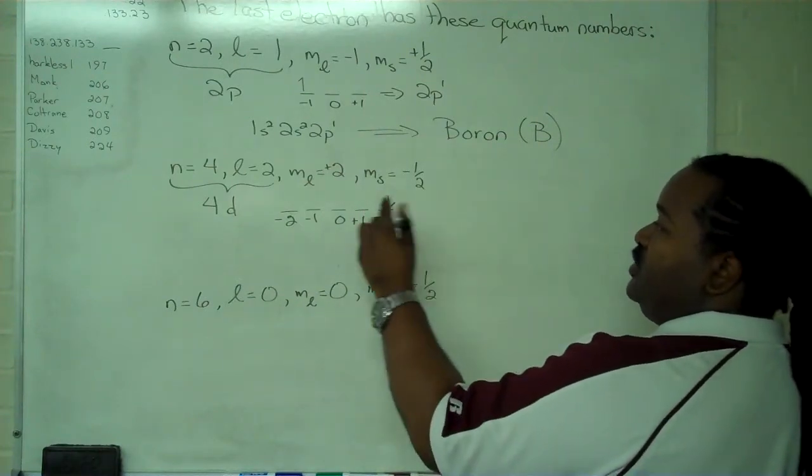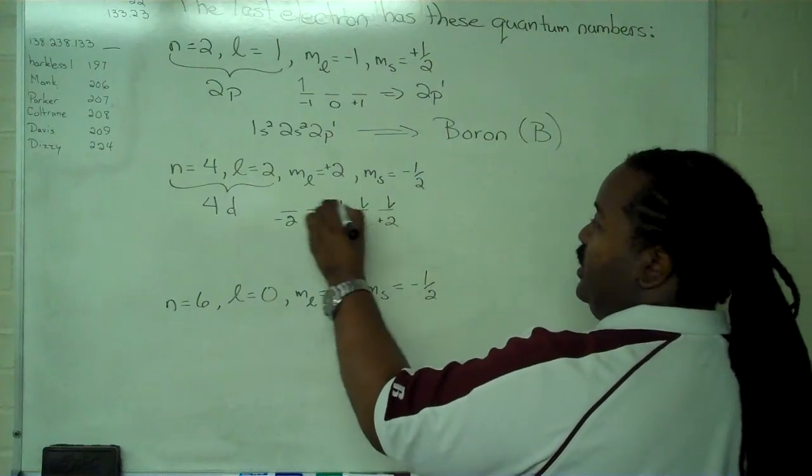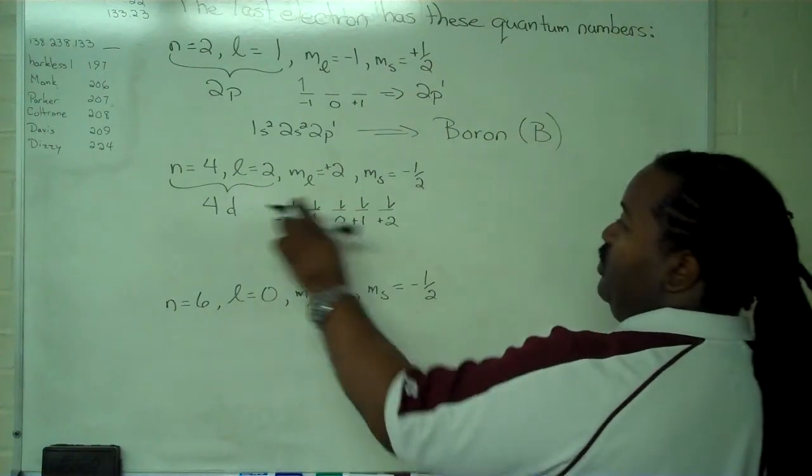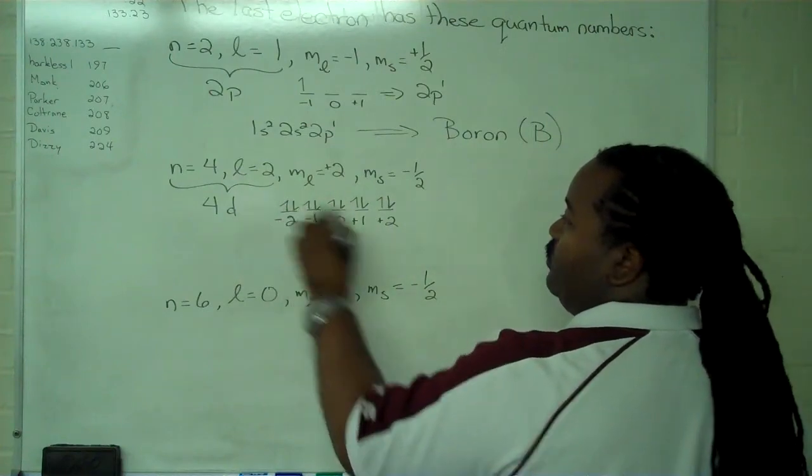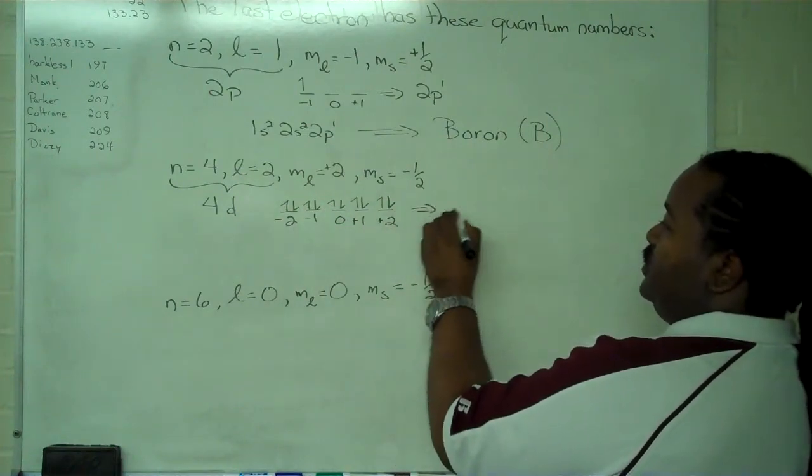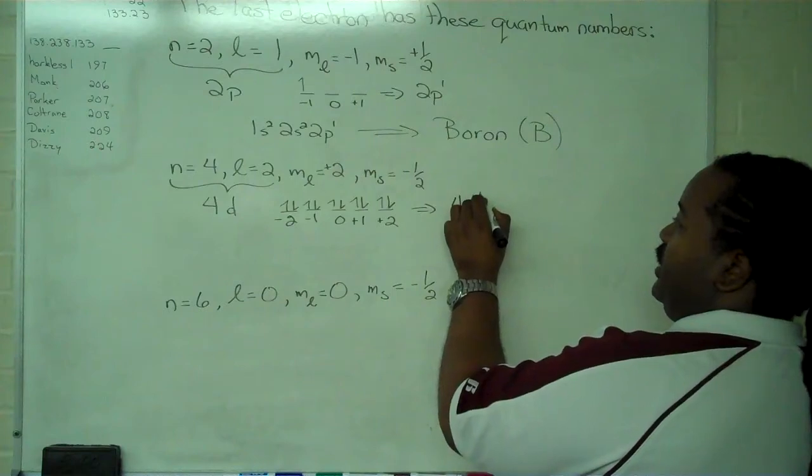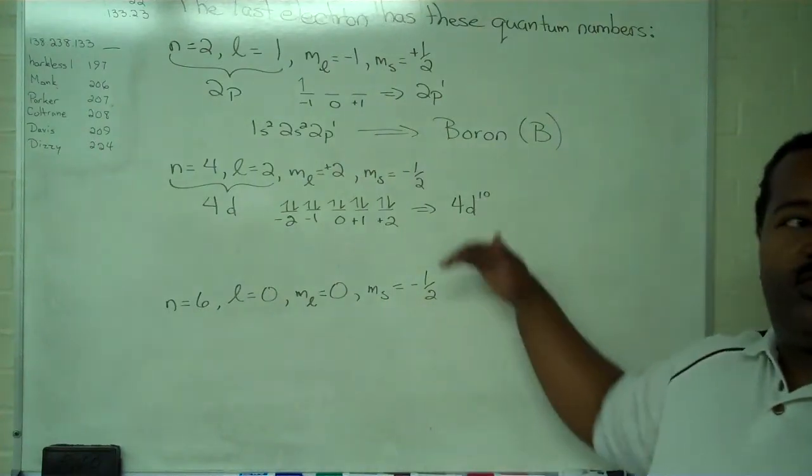In order for that to be the case, all of these must be spin down coming before it, and all of these must be spin ups. So now that we've worked in reverse, we can tell that the last term in our configuration is 4d10.